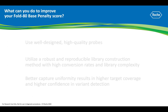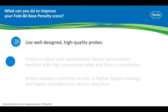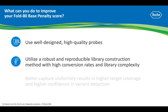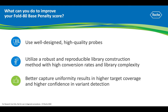What can you do to improve your Fold 80 Base Penalty score in targeted NGS? You can ensure that you're using well-designed, high-quality probes. You can utilize a robust and reproducible library preparation method that results in higher conversion rates and library complexity. With increased uniformity and lower duplicate rates, you can achieve higher target coverage at deeper sequencing depths, resulting in higher confidence for variant detection.